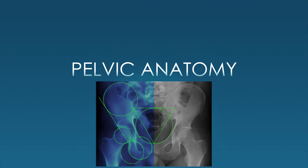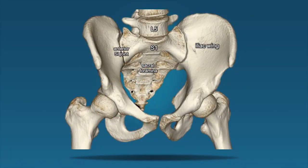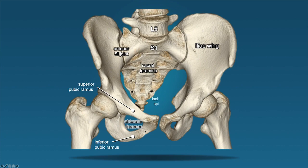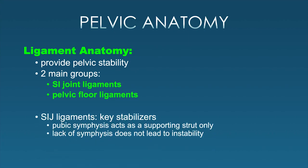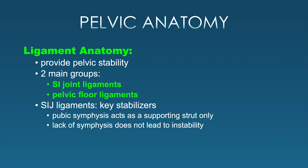Let's look at the pelvic anatomy. We have major parts including the iliac bone and the anterior SI joint. We have the superior and inferior pubic rami surrounding the obturator foramen, the ischial spine where some ligaments are involved, and the ischial tuberosity posteriorly. That is our greater sciatic notch, which will come in handy when we talk about the vessels. The ligaments provide stability, with two major groups: the sacroiliac joint ligaments both anteriorly and posteriorly, and the pelvic floor ligaments. The key stabilizers are those SI joint ligaments. The symphysis is really only a supporting strut, so disrupting the pubic symphysis alone does not produce an unstable pelvic injury.